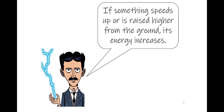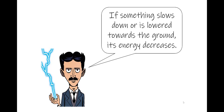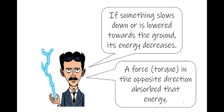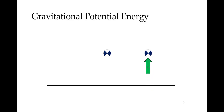So we see that if something speeds up or is raised higher off the ground, its energy increases. What caused that energy to increase? A force or torque applied in the same direction did. If something slows down or is lowered towards the ground, then its energy decreases. What caused the energy to decrease? A force acting in the opposite direction did. Let's revisit the examples from earlier. What raised an object up off the ground? A force acting in the vertical upward direction did—the force is in the same direction as the displacement.